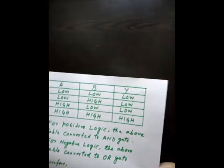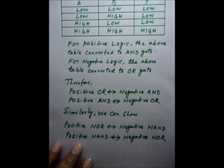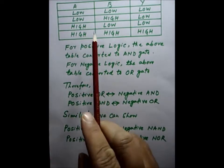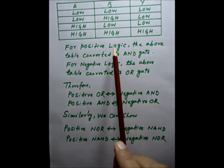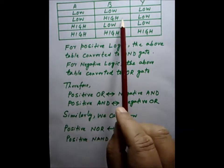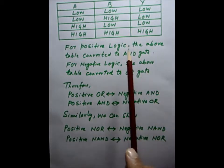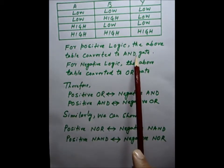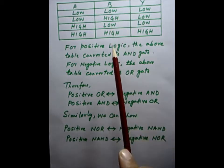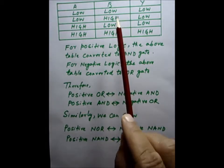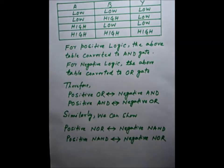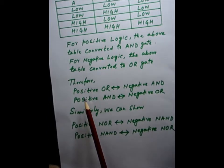Now if we take another table, and we apply positive logic to this gate, the above table is converted into an AND gate. If we apply negative logic to this table, it will be converted into an OR gate.